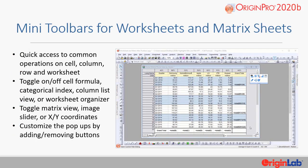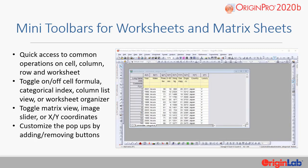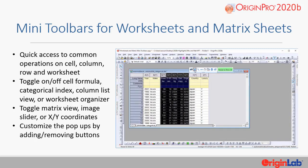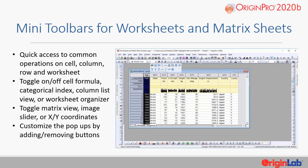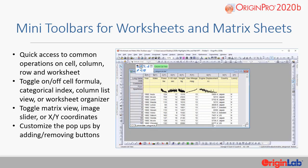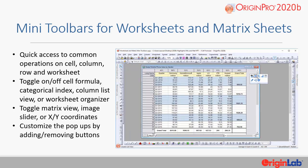Mini-toolbars are now available in 2020 B for the worksheet and matrix sheets. Users can now have access to common operations on a cell, column, row, or worksheet level. Users can toggle on and off cell formula, categorical index, column list view, or worksheet organizer, as well as toggle matrix view, image slider, or XY coordinates. These toolbars are customizable — users can add or remove buttons as they would like.